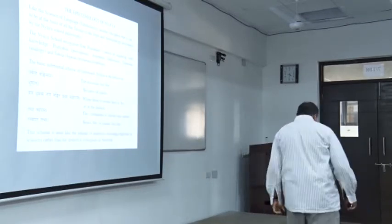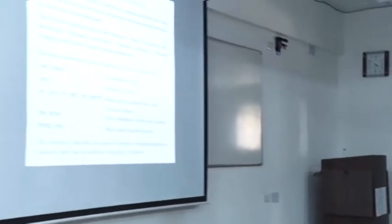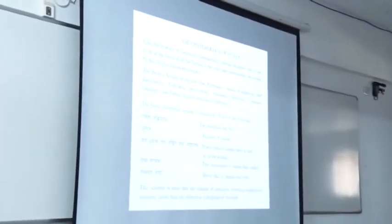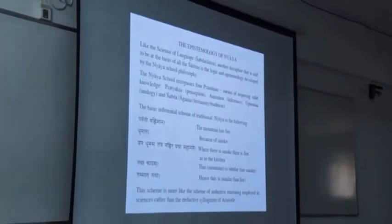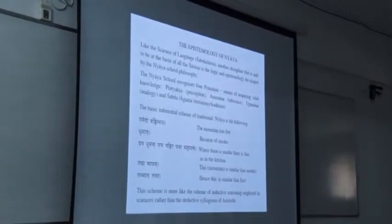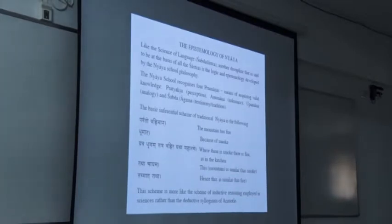We will go from grammar now to Indian epistemology — Nyaya Shastra. In Indian Nyaya Shastra, there are four means of valid knowledge: Pratyaksha, which we call perception in English; Anumana, inference; Upamana, analogy; and tradition or authoritative testimony of reliable people. The basic scheme of inference in Nyaya is: the mountain has fire, because it has smoke; wherever there is smoke, there is fire, as in the kitchen — therefore the mountain has fire.